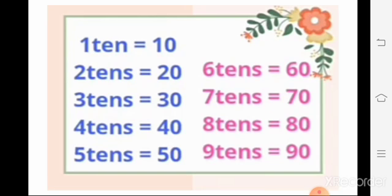Then three tens equals thirty, three zero thirty. Four tens equals four zero forty. Five tens equals five zero fifty. Six tens equals six zero sixty. Seven tens equals seven zero seventy. Eight tens equals eight zero eighty. And nine tens equals nine zero ninety. All these tens we have converted into numbers. So today our explanation ends here.